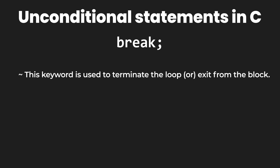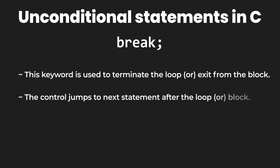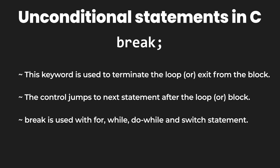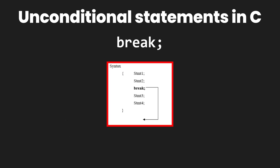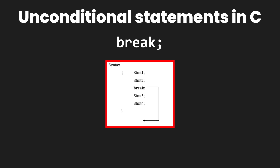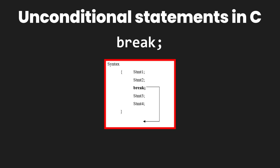Let's talk about break. Break is a keyword which is used to terminate the loop or exit from a particular block. When the break statement is executed, the control jumps to the next statement after the loop or the block. The most common use for break statement is within for loop, while loop, do-while loop, and switch statements. If break statement is used in nested loops, then only the innermost loop is terminated. A diagram on screen now explains the syntax of a break statement, showing that it is used to exit a particular block of code.